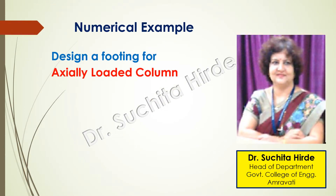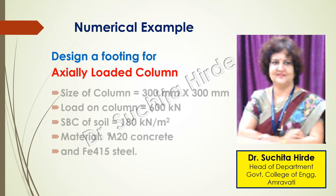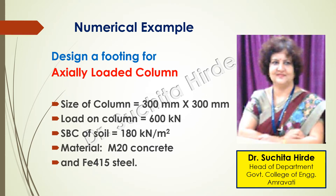These are the details of the column for which we are designing the footing. The size of the column is 300 millimeter by 300 millimeter, load on column is 600 kilo newton, safe bearing capacity of soil is 180 kilo newton per meter square, and we are using M20 concrete and Fe415 steel.